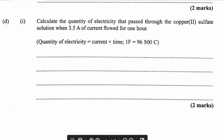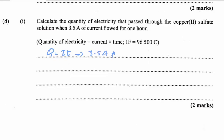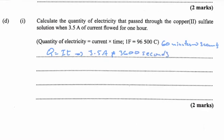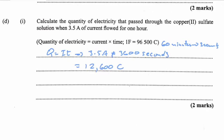Calculate the quantity of electricity that passed through the copper 2 sulfate solution when 3.5 amperes of current flowed for one hour. Quantity of electricity: Q = IT. So Q = 3.5 amperes × 3,600 seconds (converting 1 hour), which gives us 12,600 coulombs.